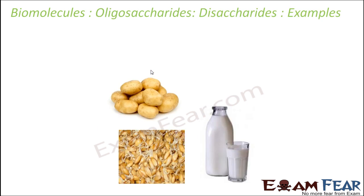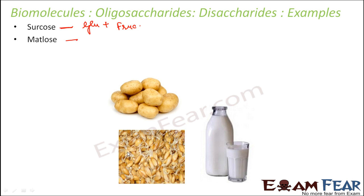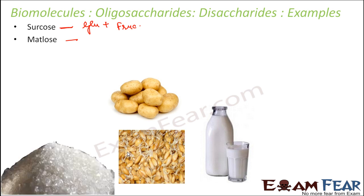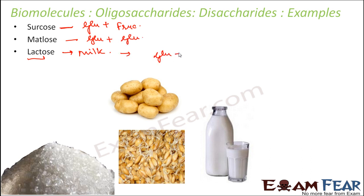Let us look at some examples of disaccharides. Sucrose is made up of glucose and fructose. Maltose is present in germinating seeds like barley, and also in vegetables like potato. Lactose is present in milk — the word 'lact' is related to milk. Maltose is made up of two units of glucose. Lactose is made up of one unit of glucose and one unit of galactose.